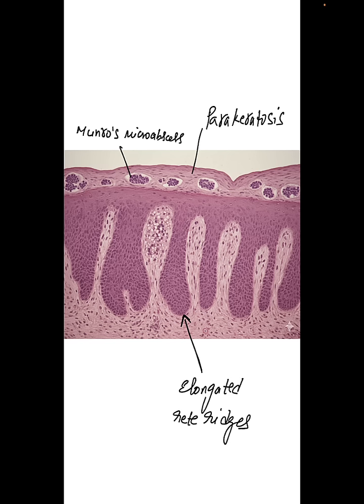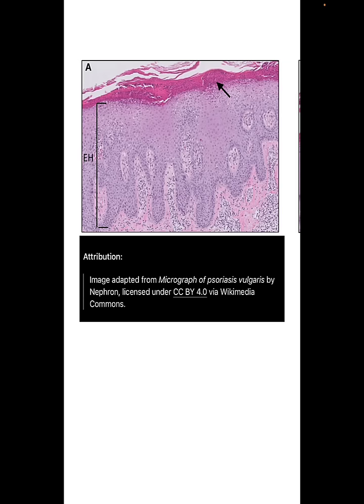There will also be small neutrophilic aggregates called Munro's microabscesses seen in the stratum corneum. Again, you can see the acanthotic epidermis with elongated rete ridges, and the stratum corneum has Munro's microabscesses. There will also be neutrophilic aggregation in the stratum spinosum — we call that the spongiform pustule of Kogoj.